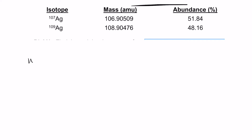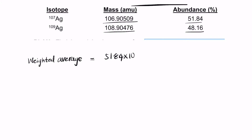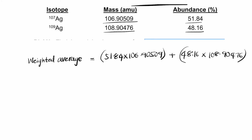The weighted average of the mass is: (percentage₁ × mass₁) + (percentage₂ × mass₂), all divided by 100. For silver: (51.84 × 106.90509) + (48.16 × 108.90476), divided by 100. Notice that we need at least four significant figures in our answer.